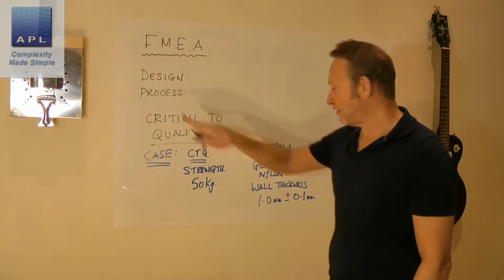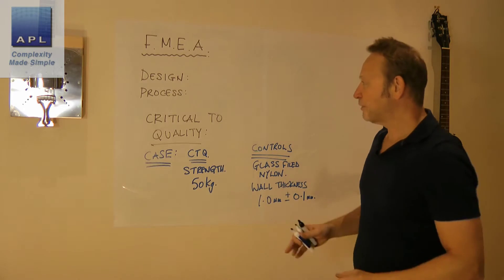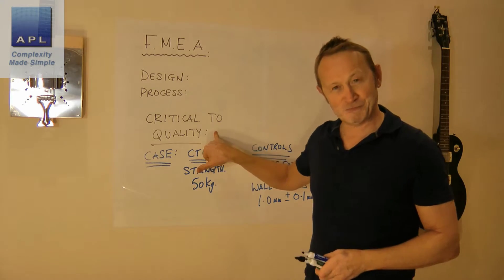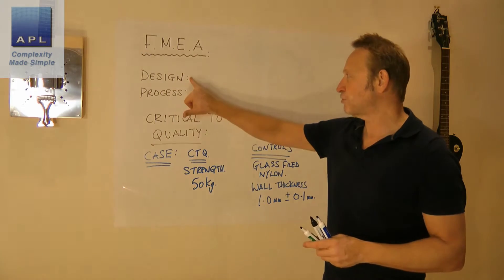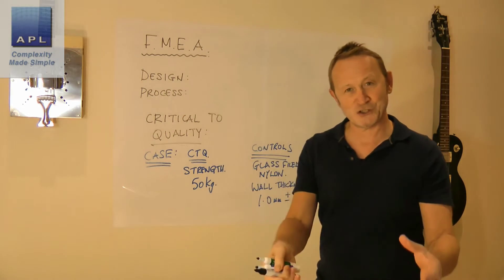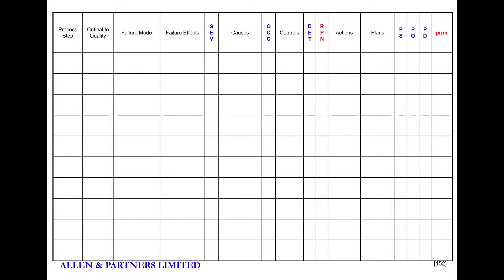Now the process FMEA has to deliver these two, because the process FMEA has got the same requirement. It's got a process step. So for the process FMEA, it won't say what's the component, it'll say what's the process step. You can see it on this form here, that's the way I've designed it. Look, process step. Then next to it it says what's critical to quality about this process step? Well if this process step was the injection molding stage of the production process, what would be critical to quality? Well that we use glass filled nylon and that the wall thickness is held to a particular size and a particular tolerance.